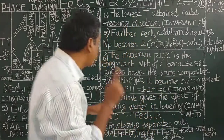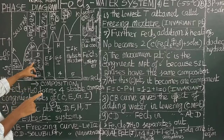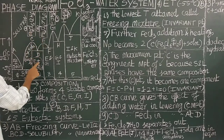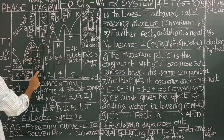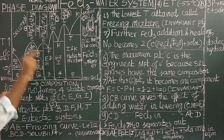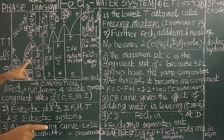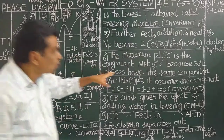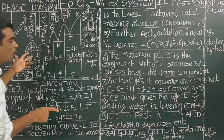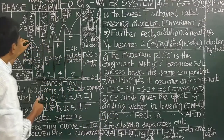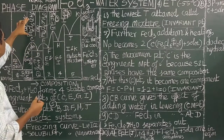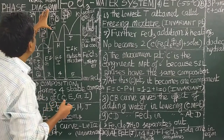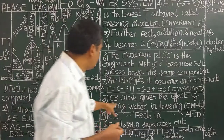This point is also an invariant point, but at the eutectic point there are three phases, whereas at the congruent melting point there are only two phases — solid and liquid — with the same composition. At point C, ferric chloride tetrahydrate is the only component present. At point G, pentahydrate is the only component present in the system.